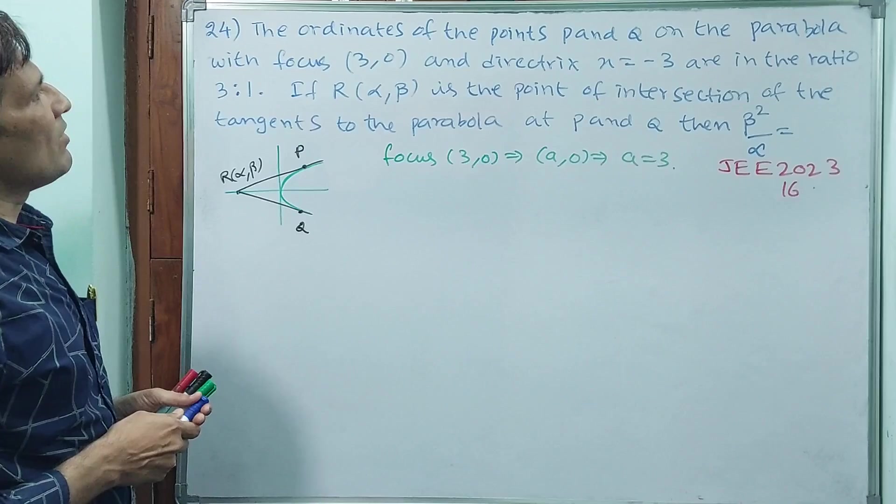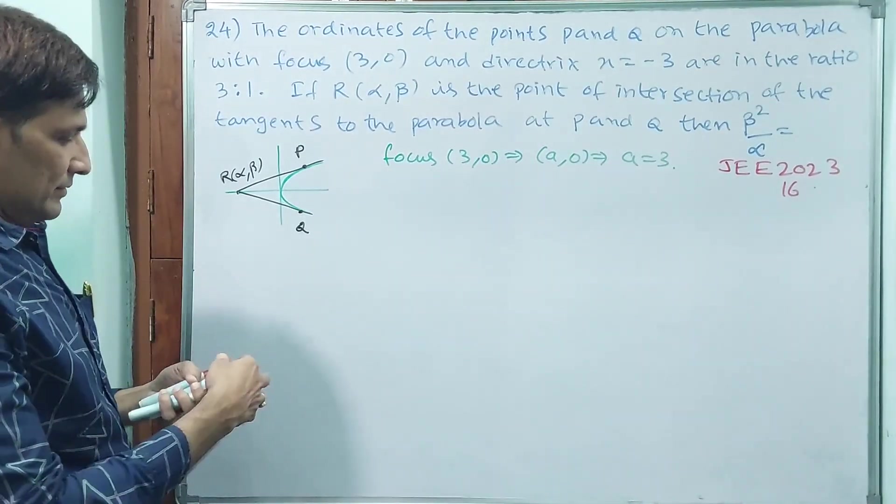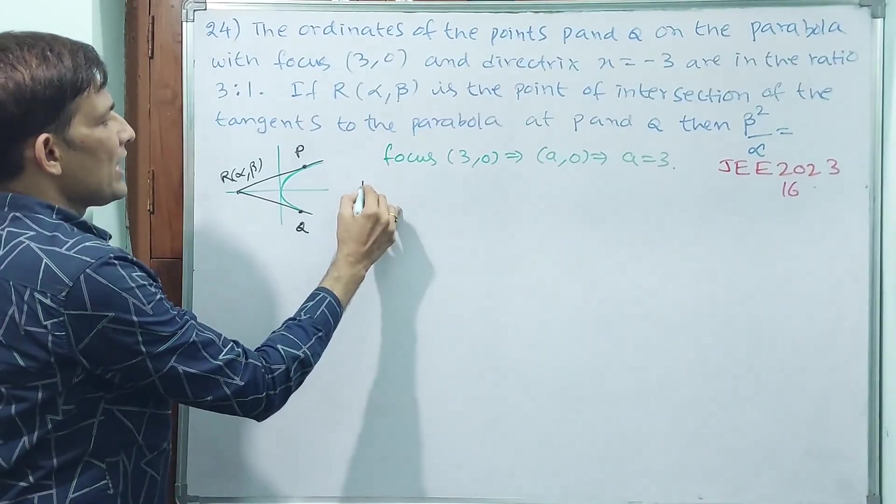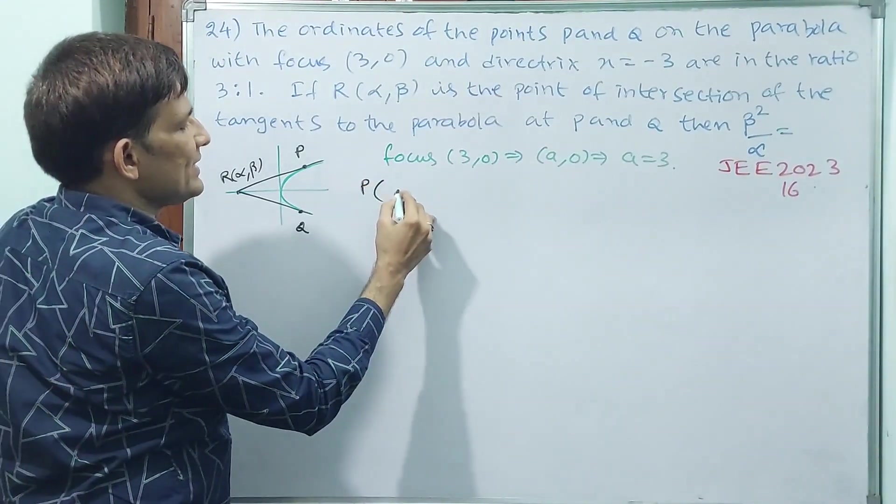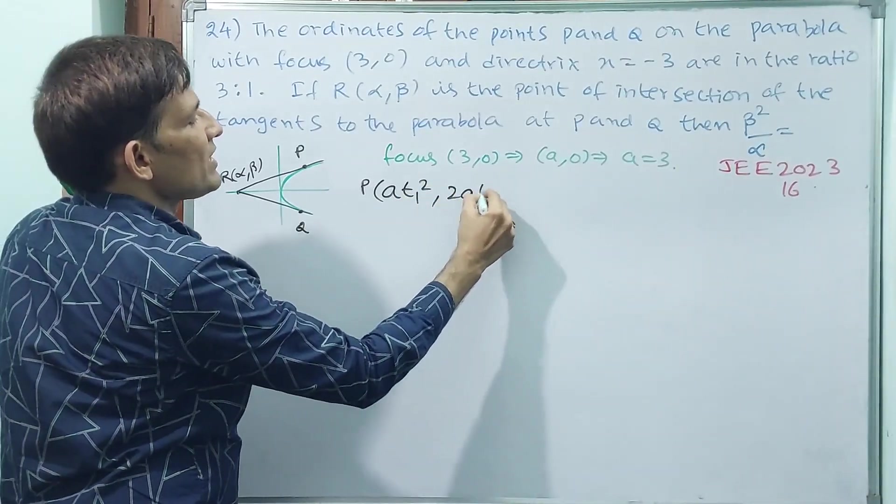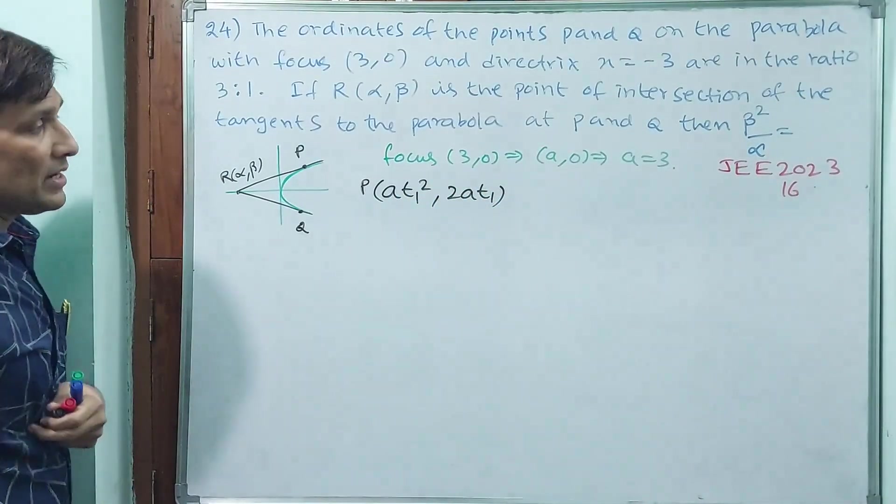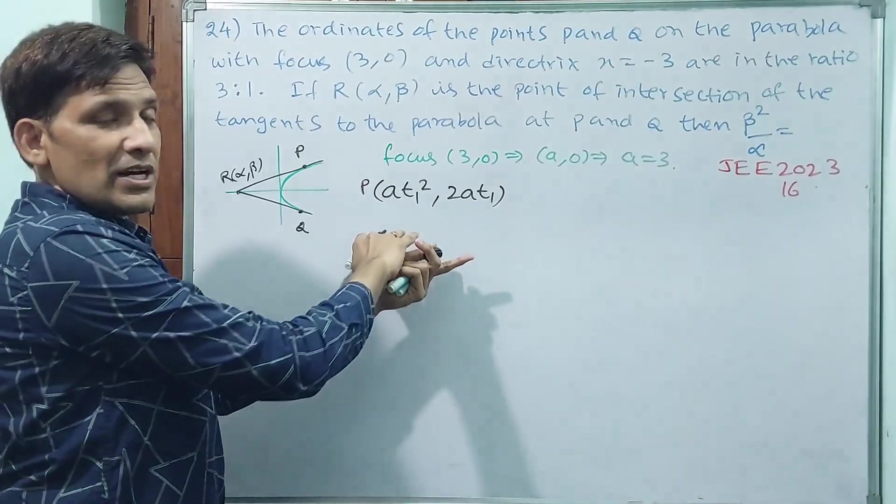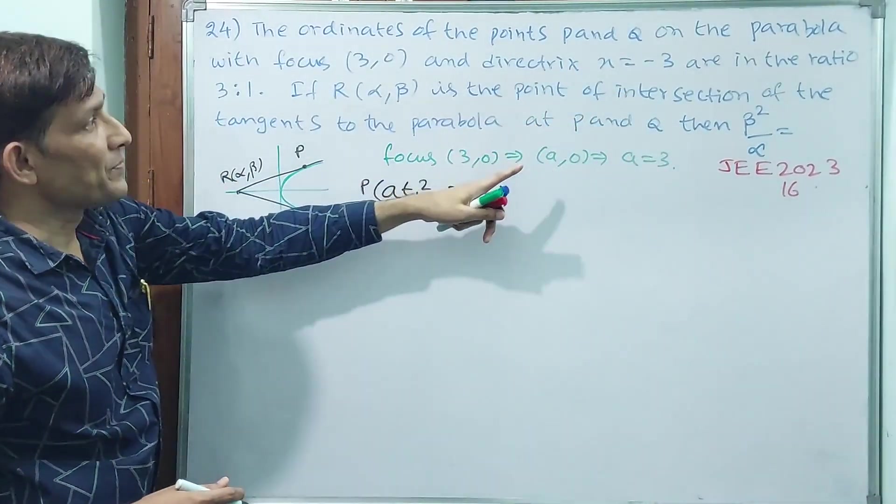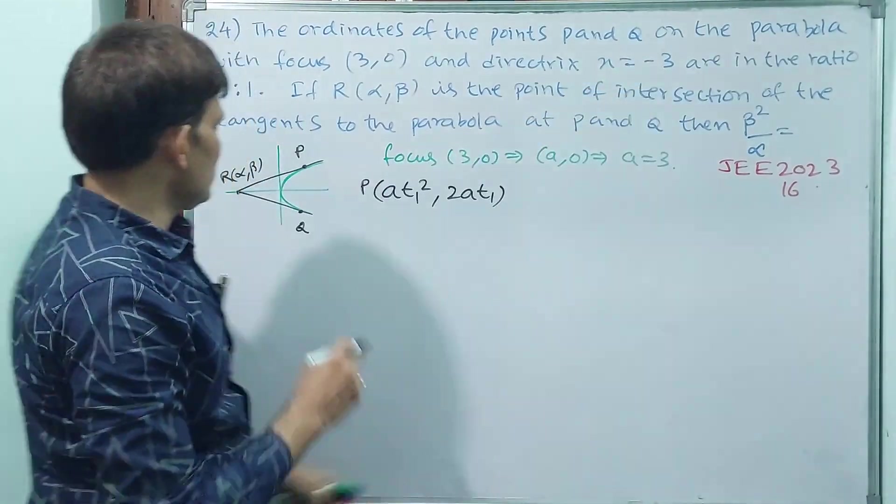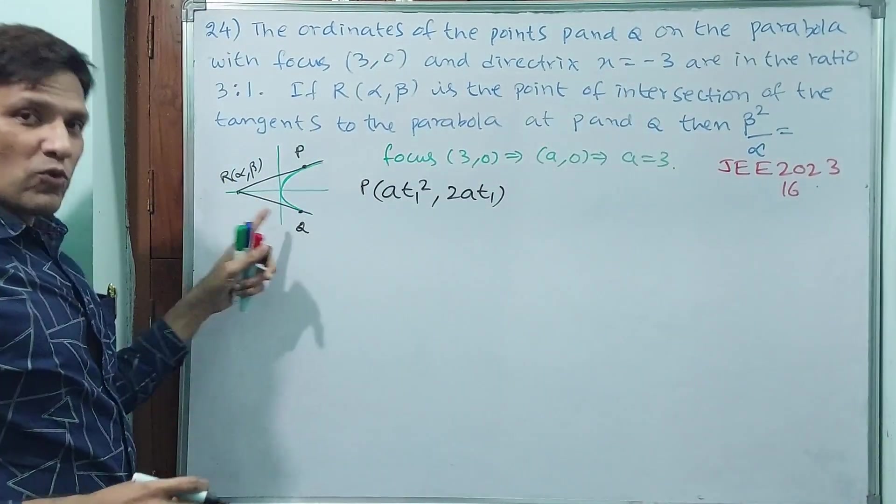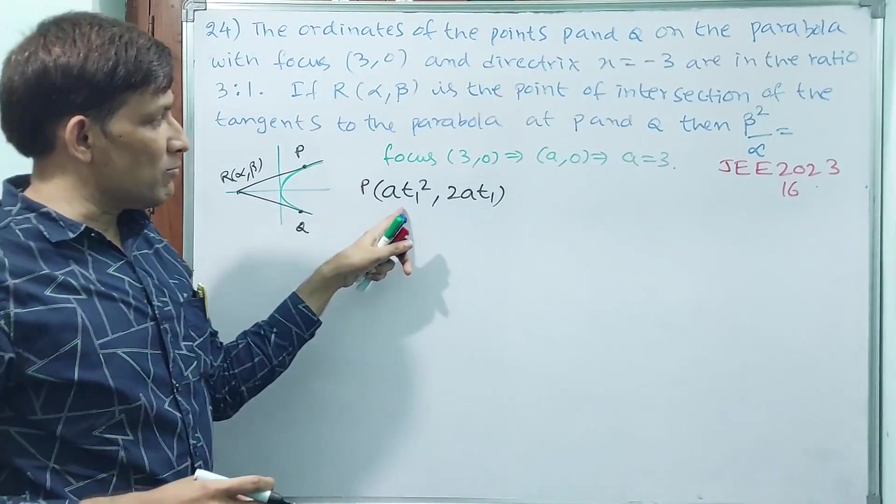Another thing, what I want to say: P and Q, how we are going to take, that is important here. Like last question, P I am going to take (at₁², 2at₁). Here, whether we want to take 2at or at square depends on y² = 4ax or x² = 4ay. When x = -3, that means this is y² = 4ax. That is why we can take this.